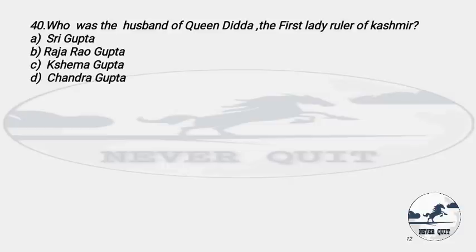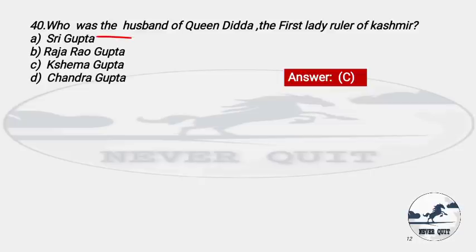Question 40 (Last Question): Who was the husband of Queen Didda, the first lady ruler of Kashmir? Options: A) Shri Gupta, B) Raja Rao Gupta, C) Kshema Gupta, D) Chandra Gupta. The right answer is option C — Kshema Gupta. Note: Shri Gupta is the founder of the Gupta Empire. Kshema Gupta was the husband of Queen Didda.